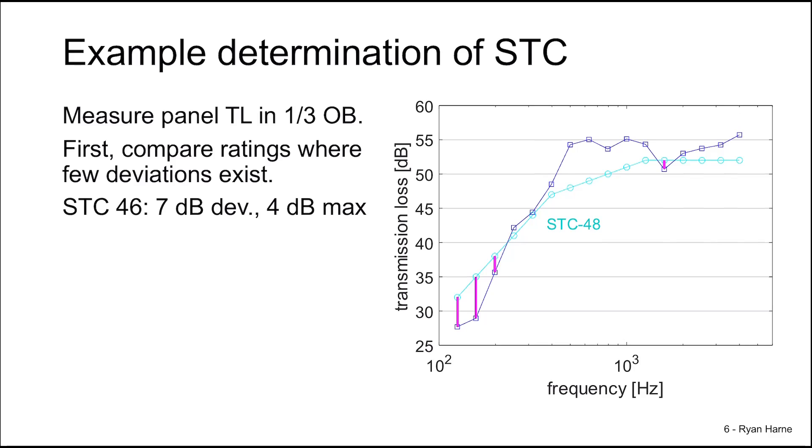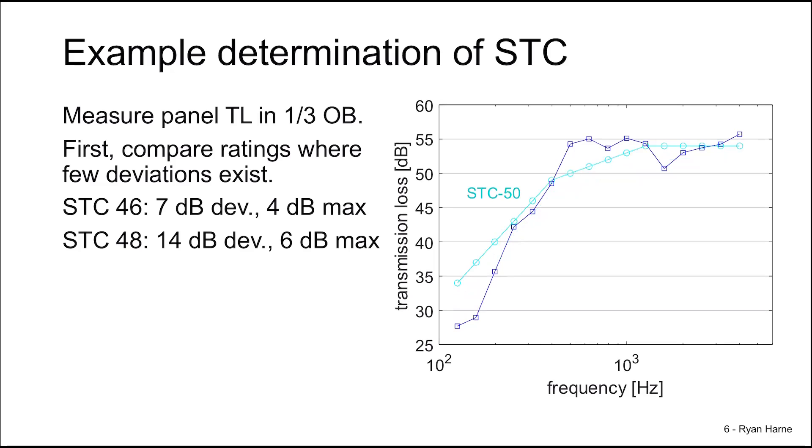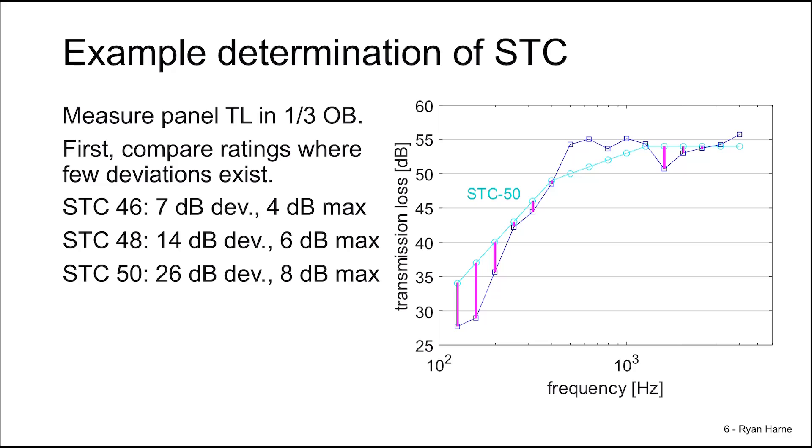Now there are a few more deviations here, highlighted in magenta. We find that their sum equals 14 decibels and the maximum value is six. So we're still below our compliance metrics. Let's keep moving up. Let's go to STC 50. We have far more deviations now, and when we add them up they total 26 decibels and eight decibel max. So we are right on the verge of violating the first compliance metric: no deviation may exceed eight decibels.